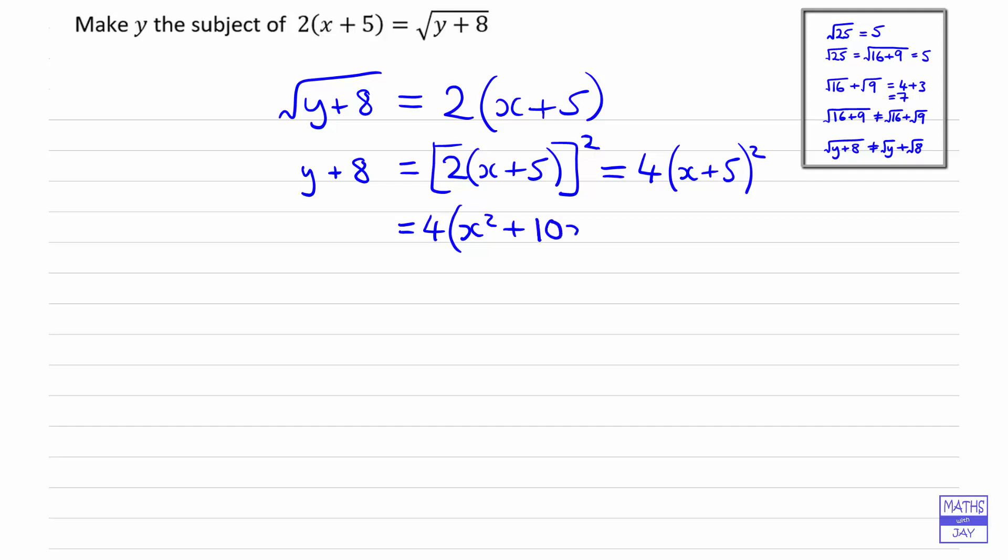Then we could multiply out the right hand side—it's not actually necessary but let's multiply it out anyway, it will probably make it easier to think about. So we've got 4x squared plus 40x plus 100.